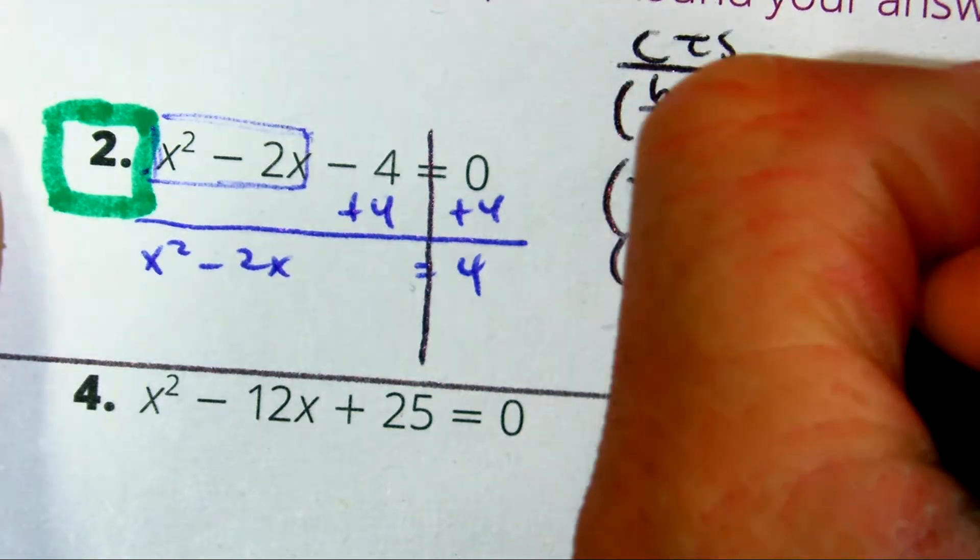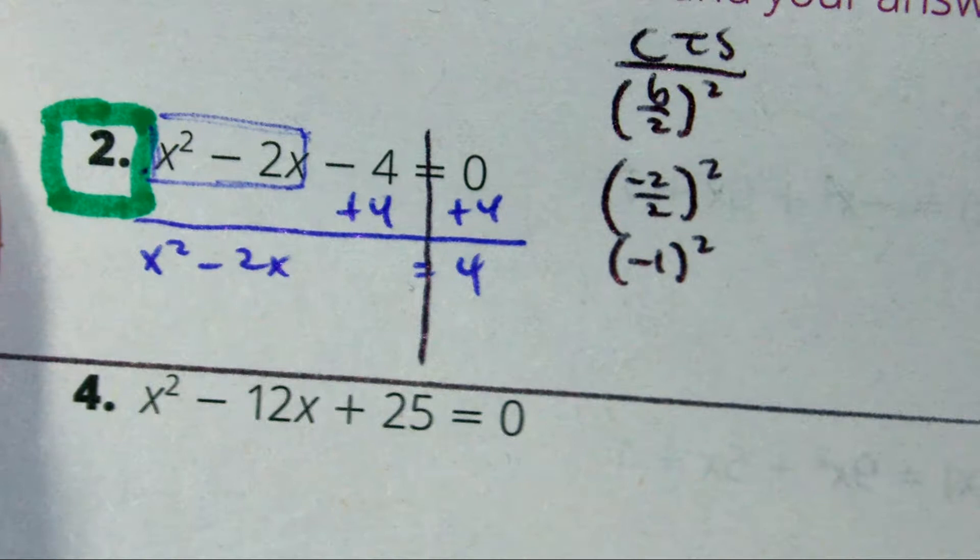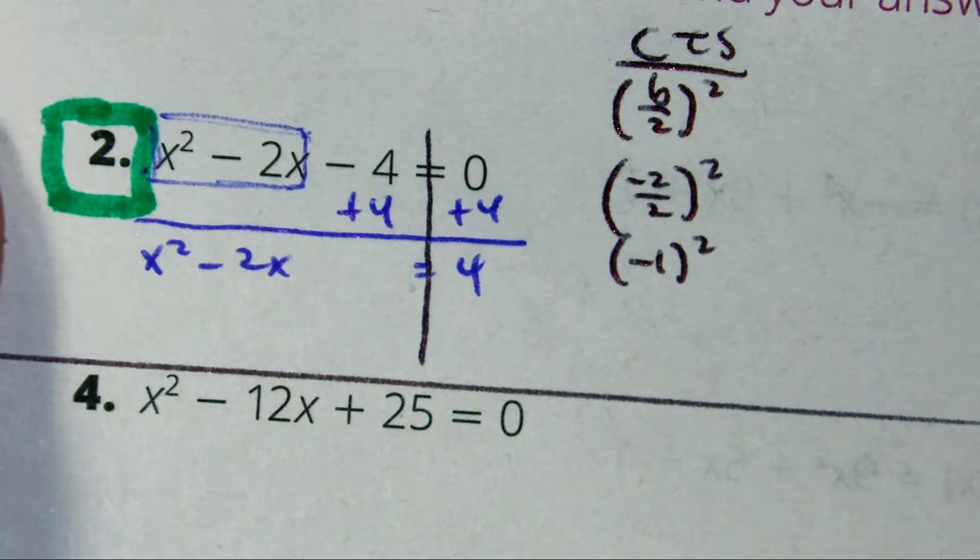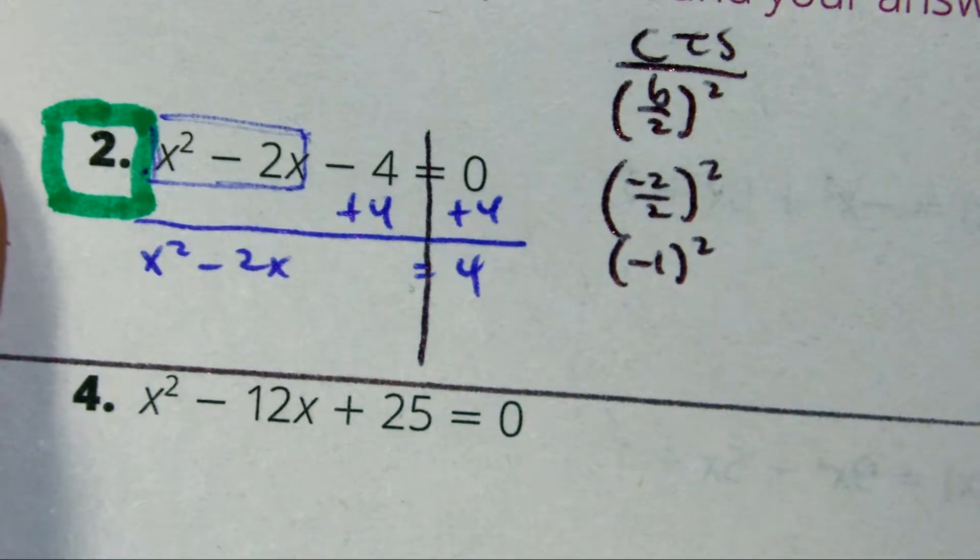Make sure you put that in parentheses. And Oscar, negative 1 squared? Negative 1 squared? Positive 1.